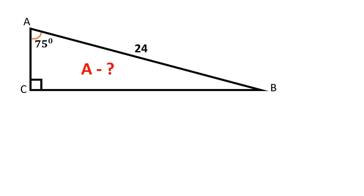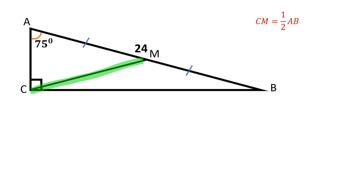Let's draw the median CM from the right angle to the hypotenuse. The median to the hypotenuse is equal to half of the hypotenuse. If you are not familiar with this formula, please check my video on this topic in the description below.